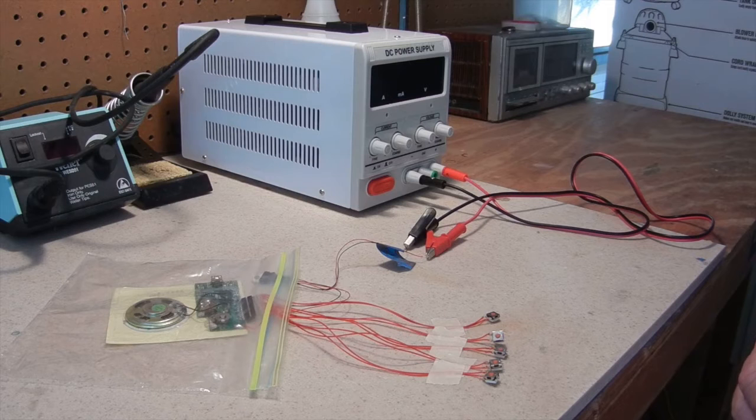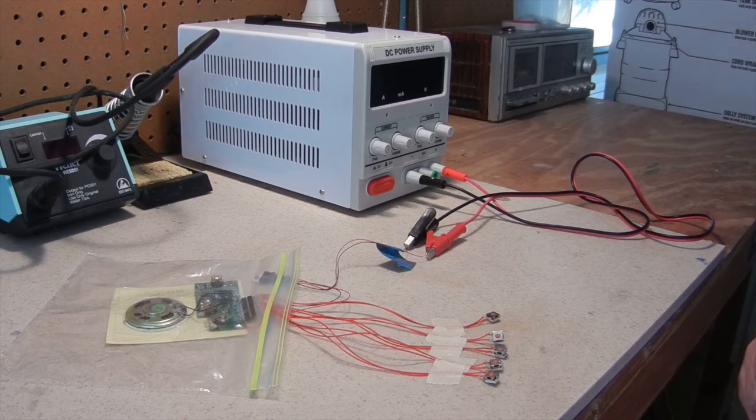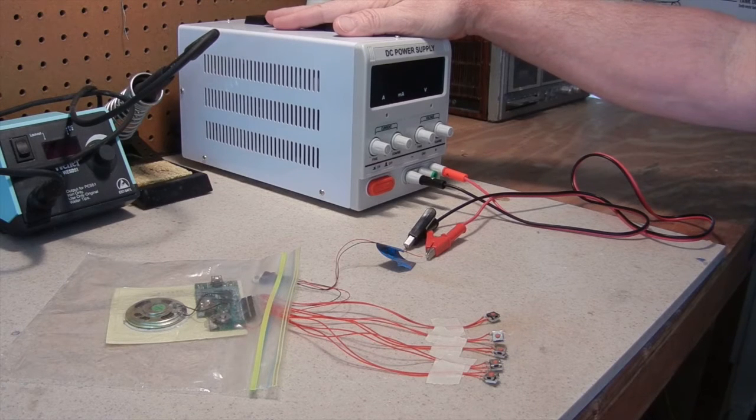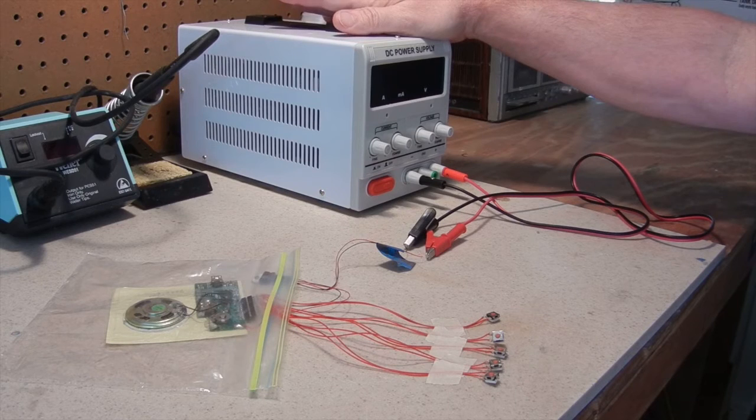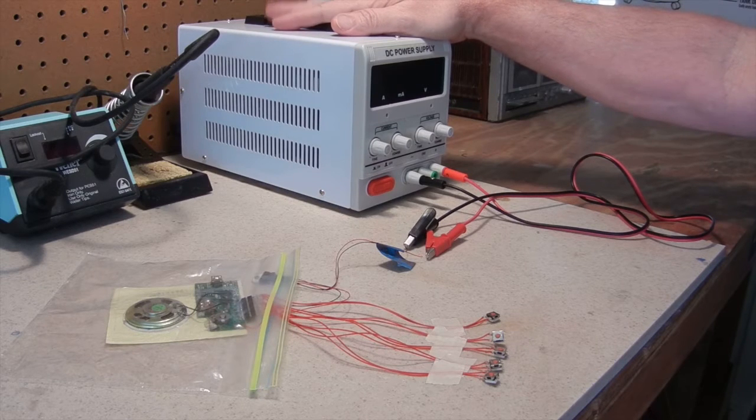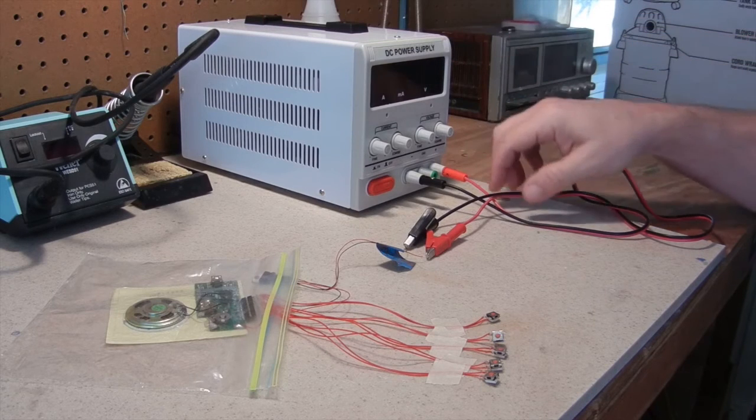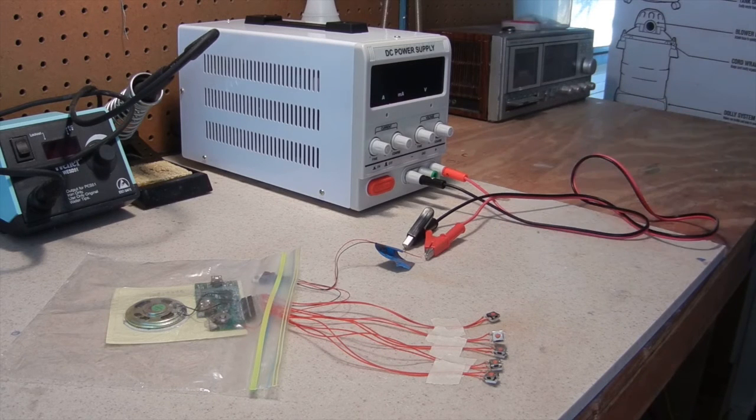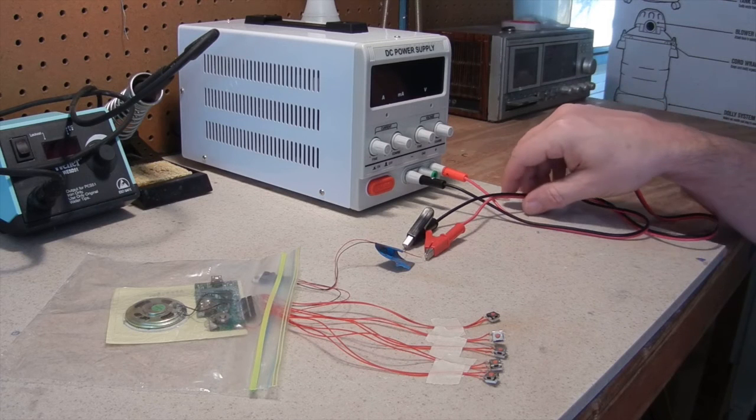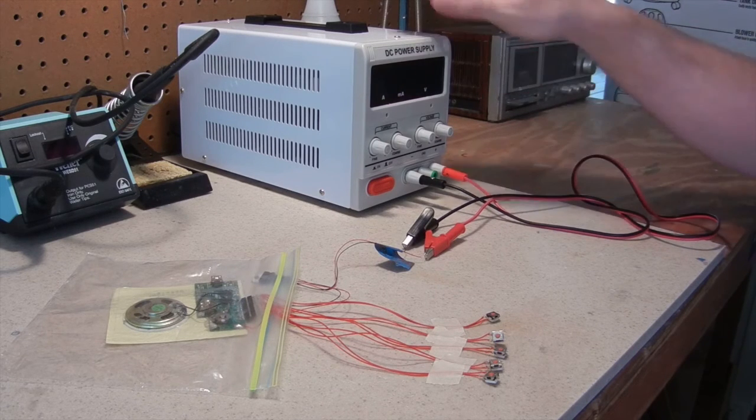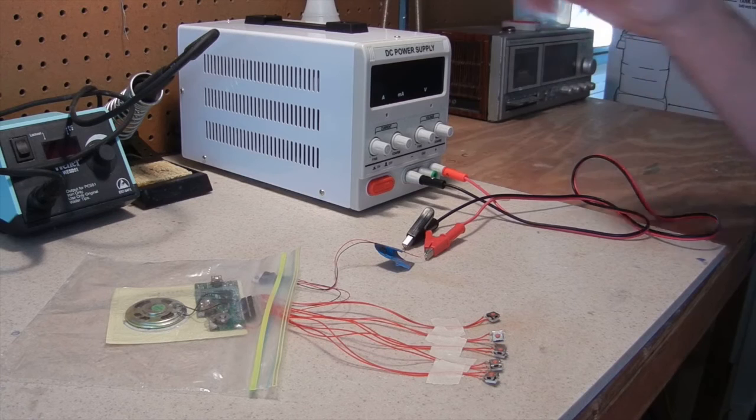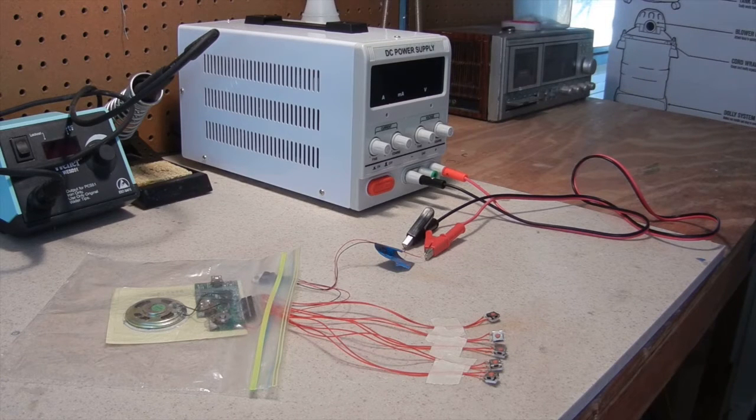As you can see in front of you, I basically broke down and got myself a DC power supply for the workbench through eBay, as well as the wire clips with banana plugs going into the alligator clips. These were a couple bucks through eBay and this here was about $43, so not a bad little investment.